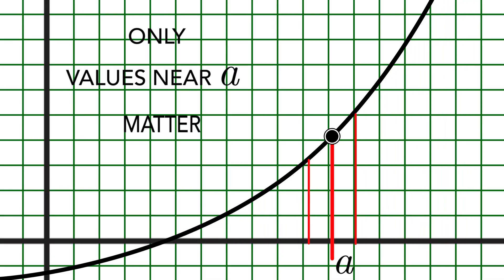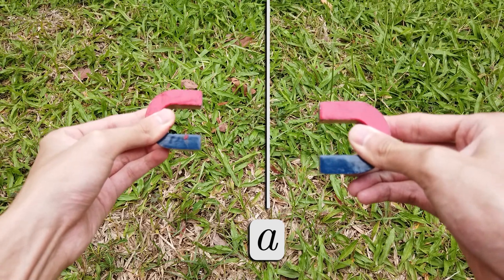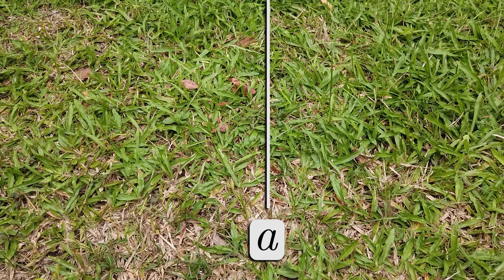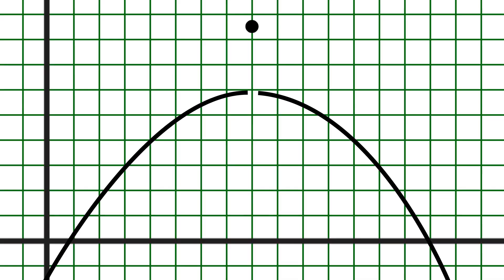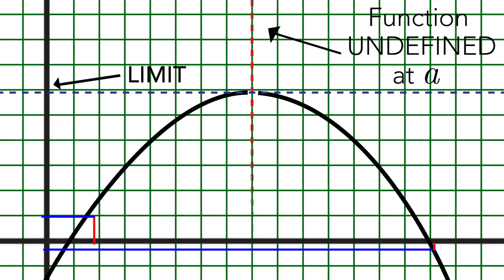Second, is that when we are finding the limit at a, we are only concerned with values very close to the number a, but not a itself. It doesn't matter if the limit is not the same as the y value at a or even if a has no value.